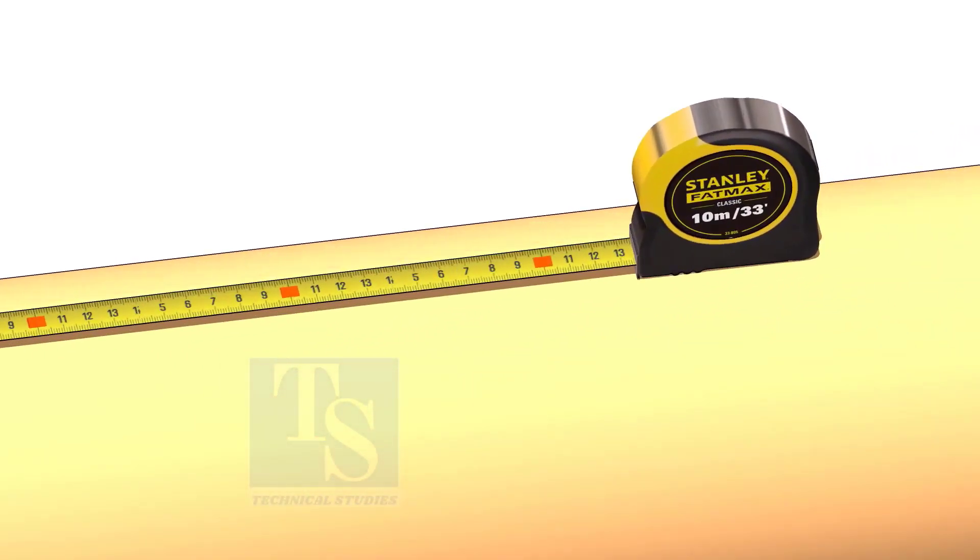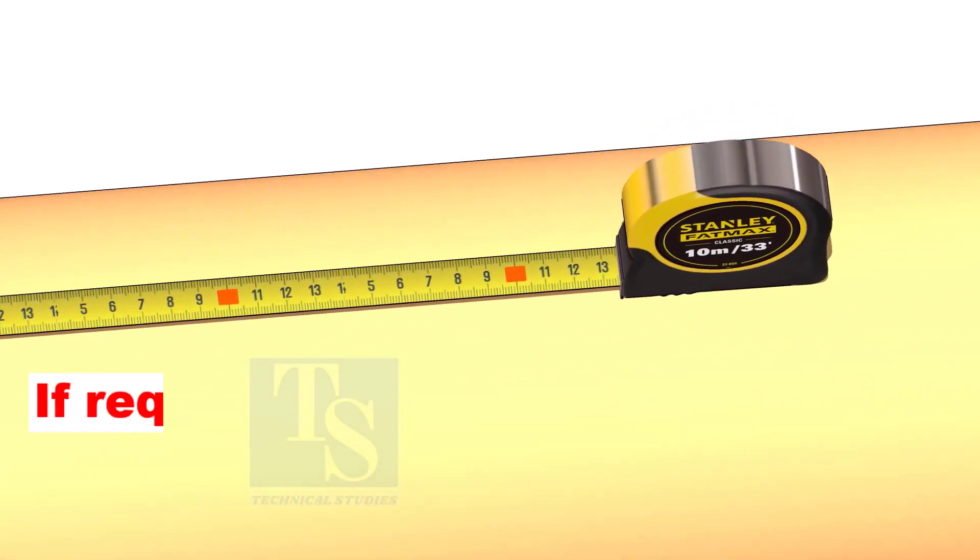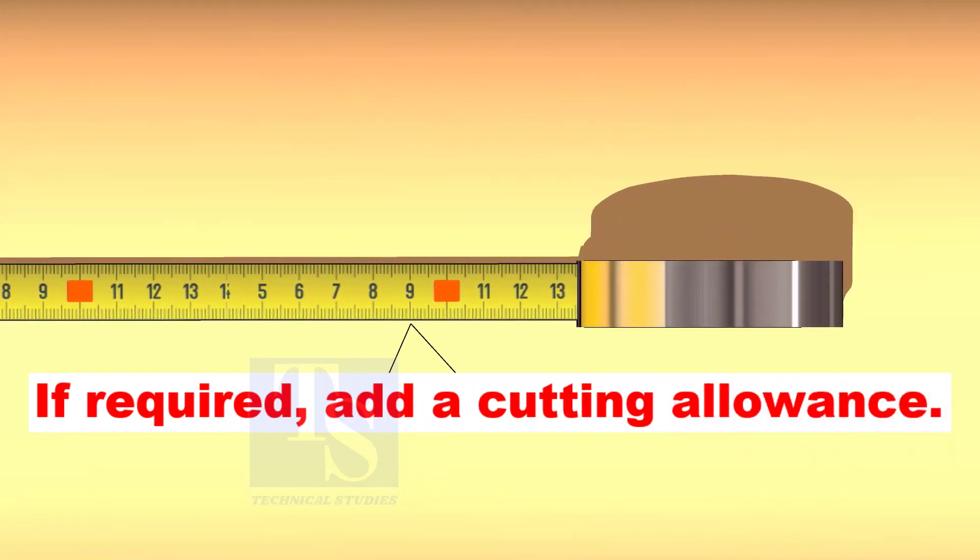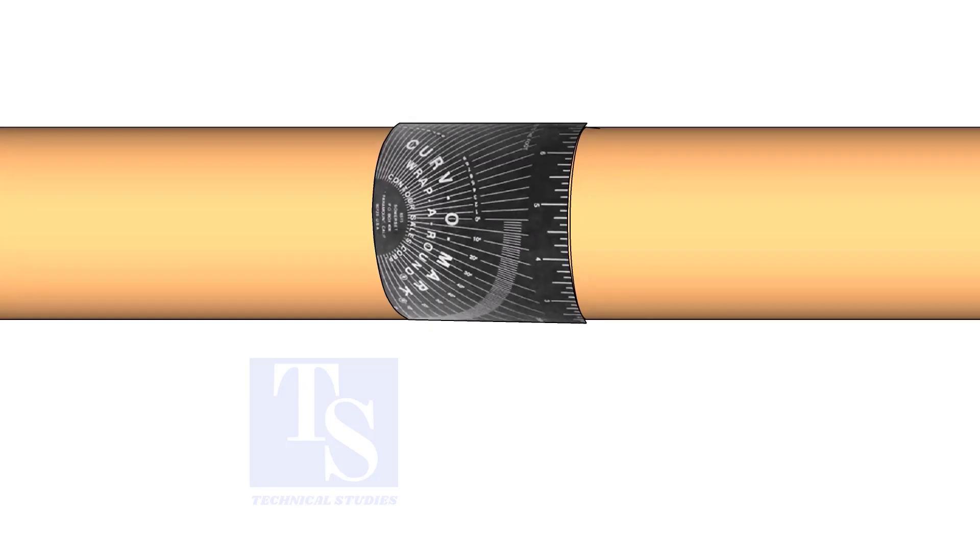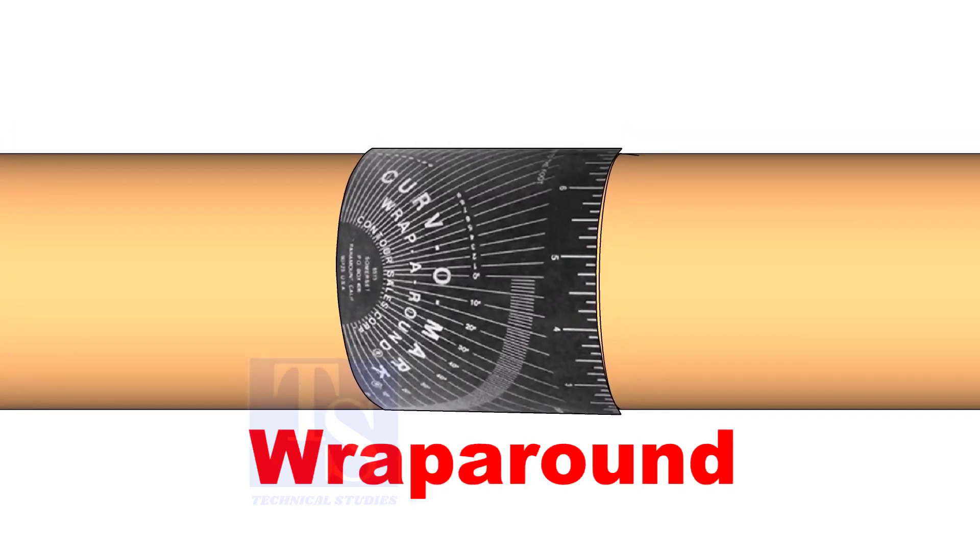Mark the required length of the pipe. If required, add cutting allowance. Use a wrap-around to draw the circular line.